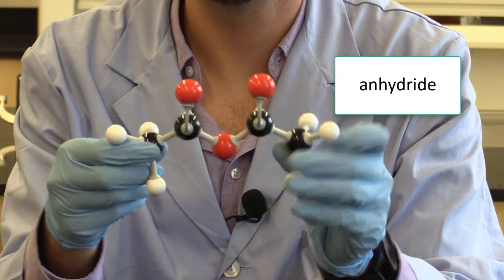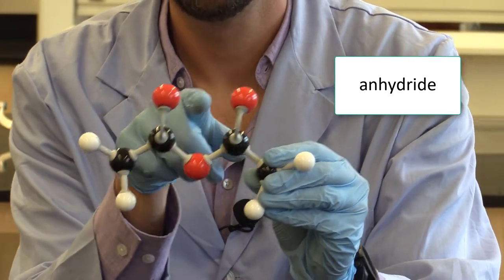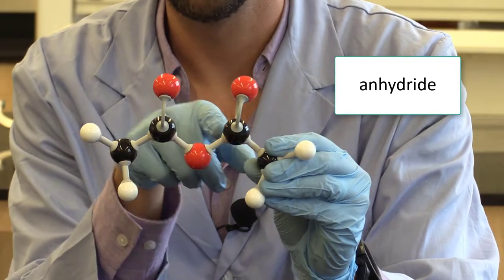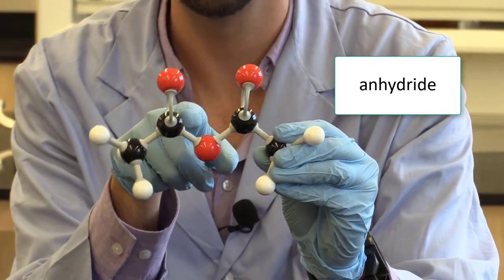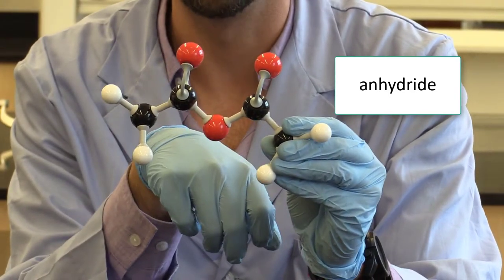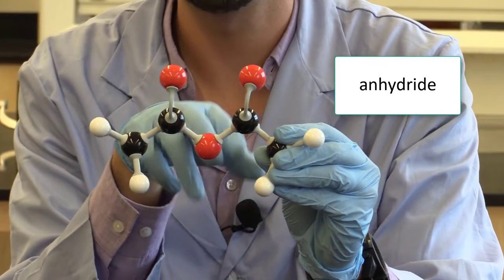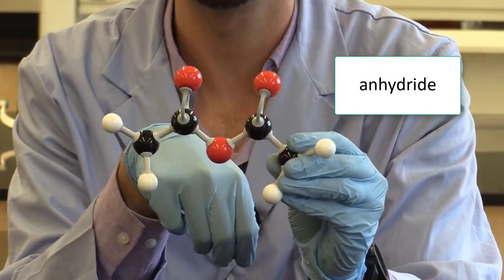This guy here is an anhydride. So for the anhydride it's a carbon double bonded to an oxygen, and then the carbon bonded to an oxygen and then this oxygen is bonded to another carbon which is double bonded to another oxygen. So overall for this functional group you have two carbons and three oxygens.